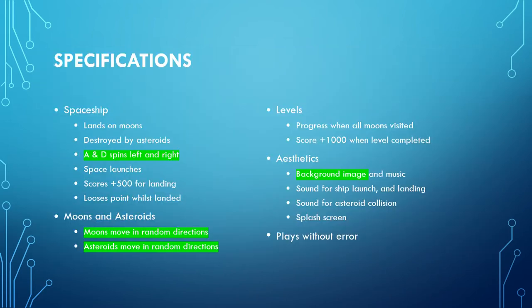So far in creating our game we have a spaceship object which spins left and right on the A and D keys, we have moons and asteroids which move around randomly in random directions in the room, and we have a background image.